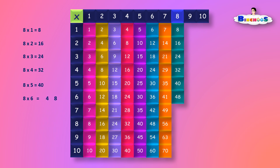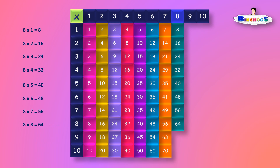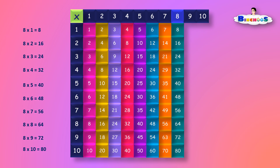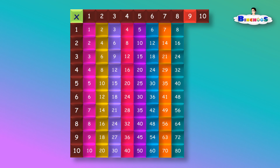8 times 6 is equal to 48. 8 times 7 is equal to 56. 8 times 8 is equal to 64. 8 times 9 is equal to 72. 8 times 10 is equal to 80. Multiplication of 9.